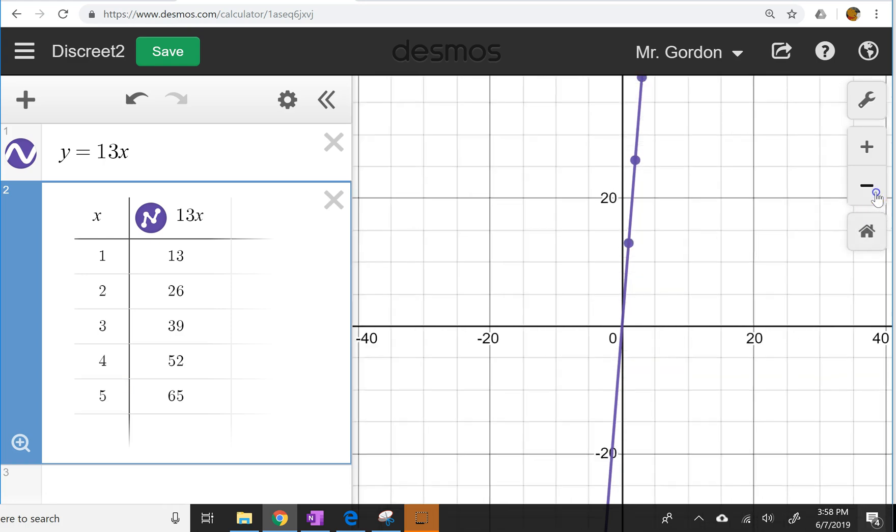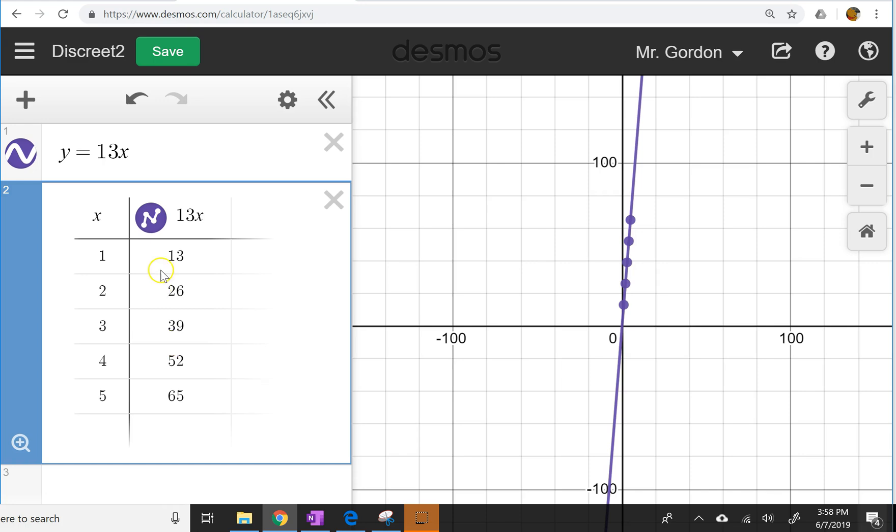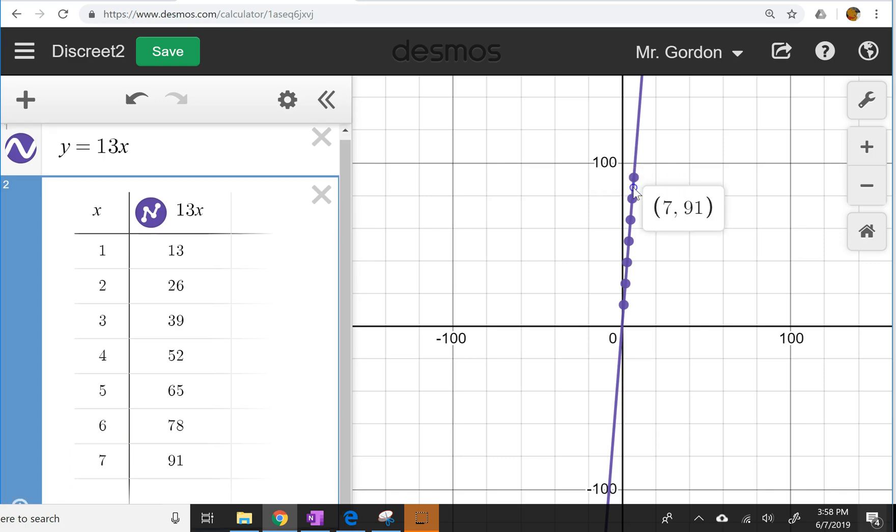So if I zoom out, we can see how these points from the table correlate to the points on the graph and we can continue to add points on the graph, whole numbers of hours and the number of e-books that would have been downloaded at those times. The question is, in this scenario,